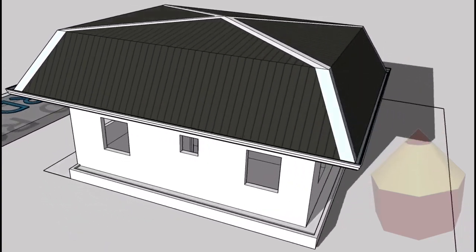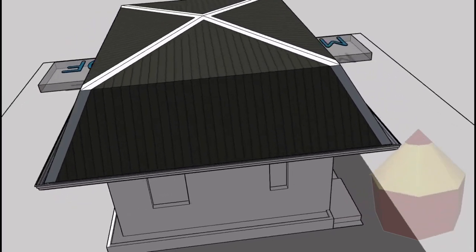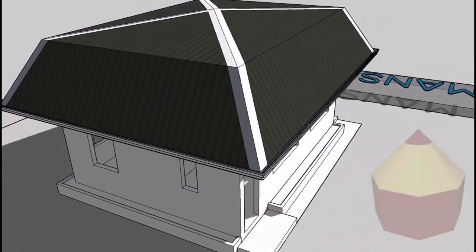Like a hip roof, the mansard roof features a four-sided design. However, these roofs are double-slope, with the lower slope being very steep.